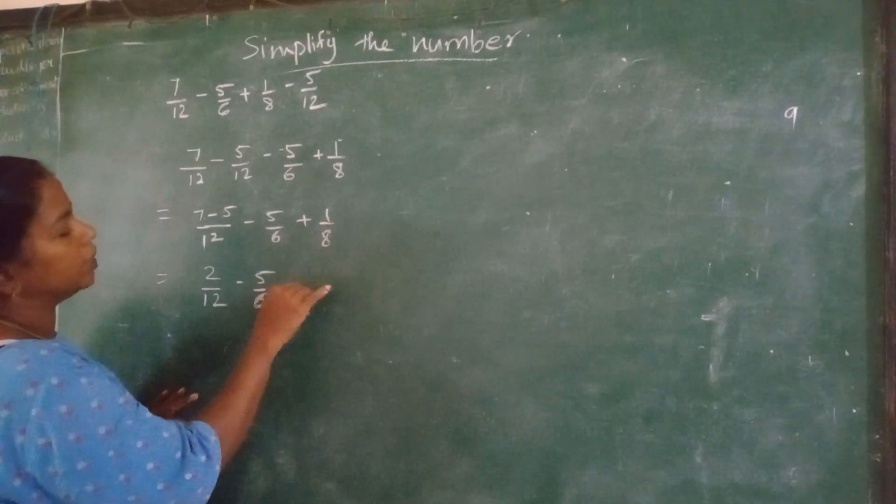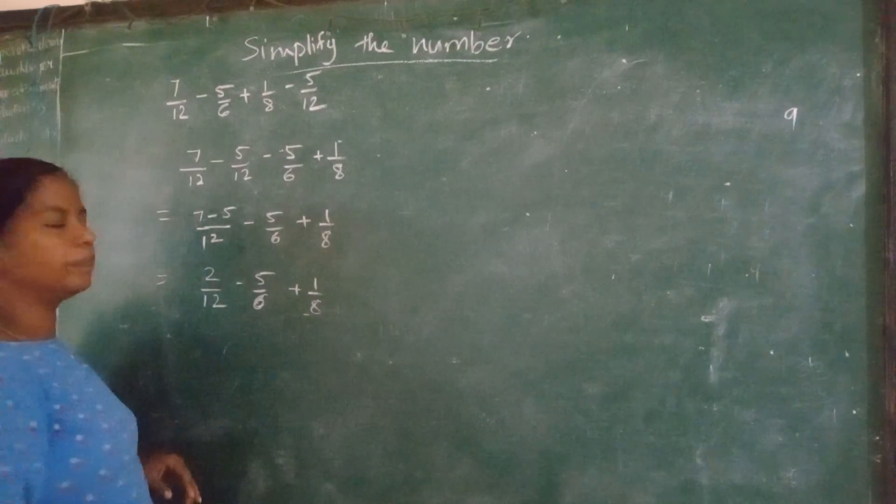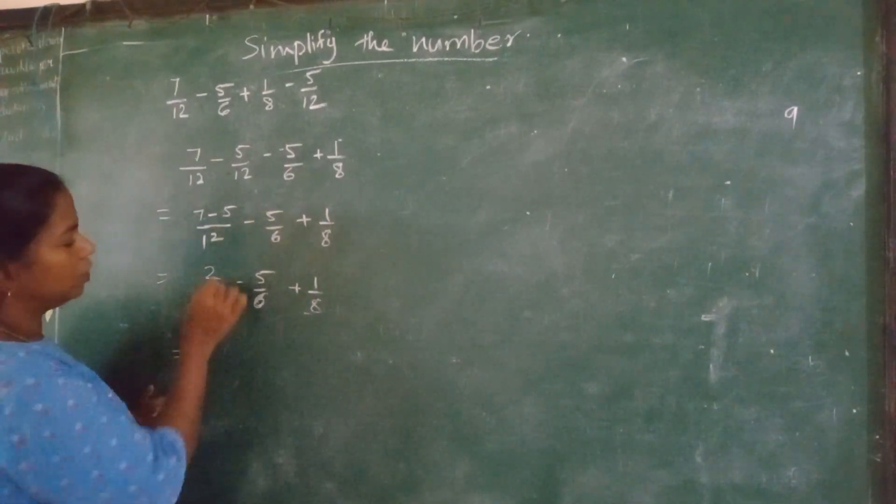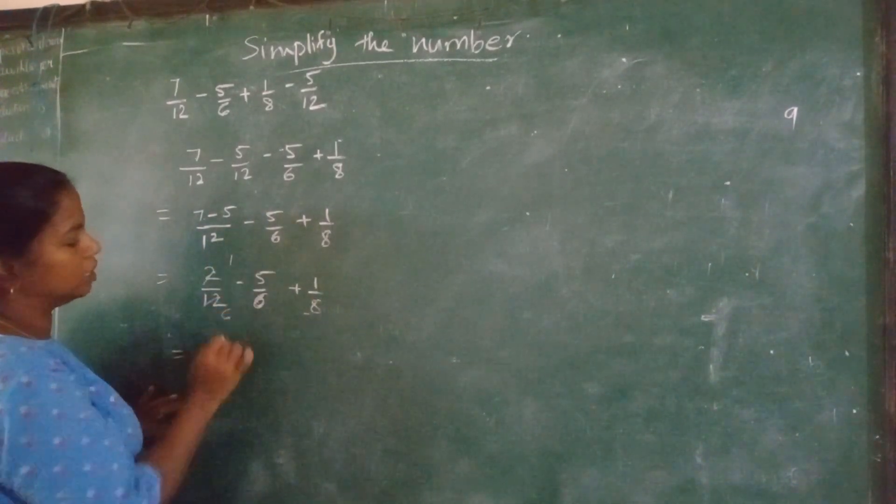Now this I can reduce further. 2 ones are 2, 2 sixes are 12. So 1 upon 6 minus 5 upon 6 plus 1 upon 8.